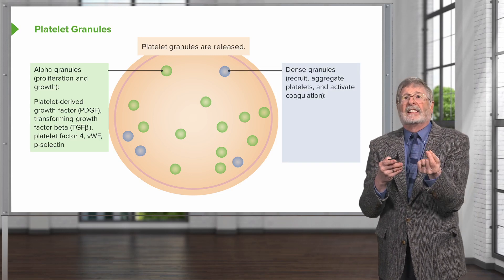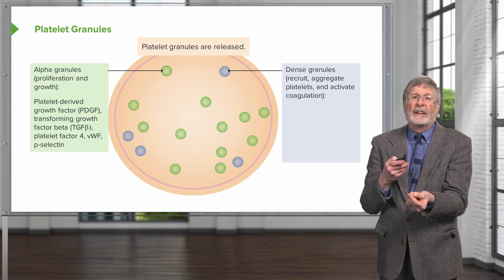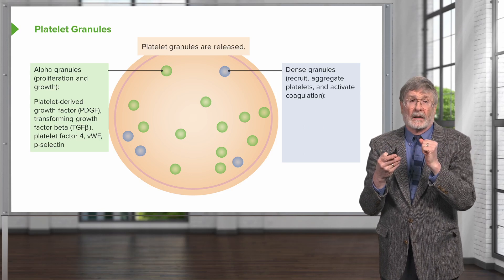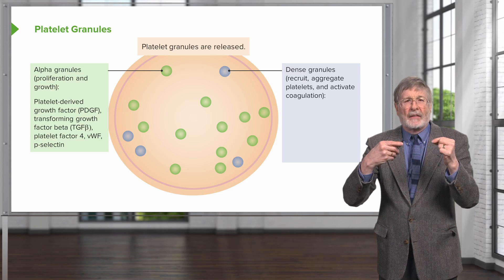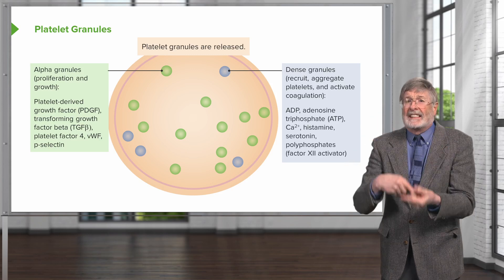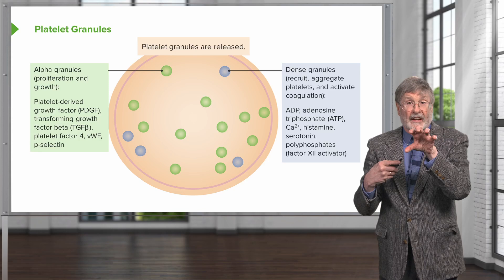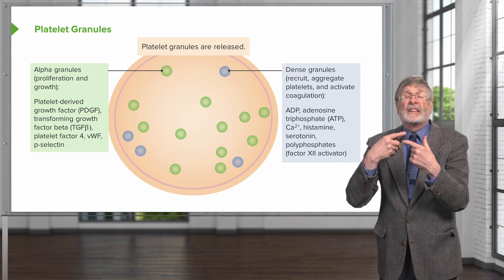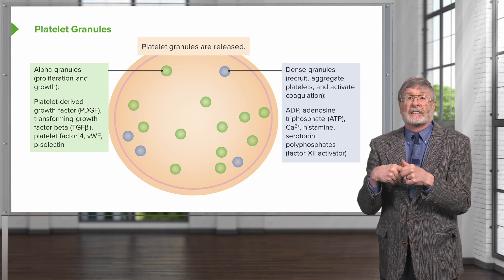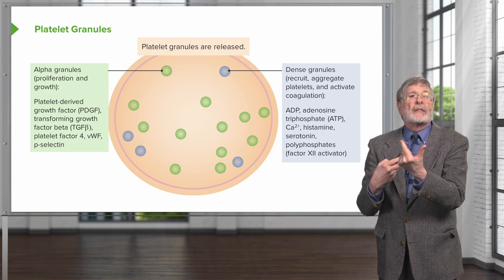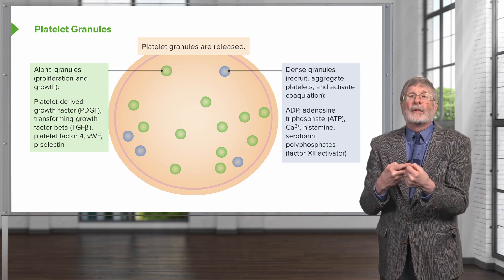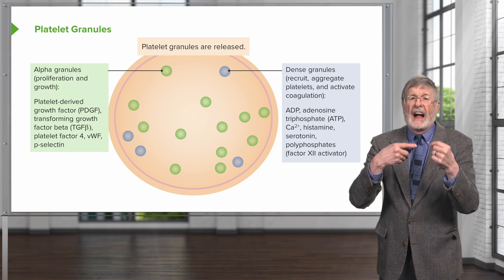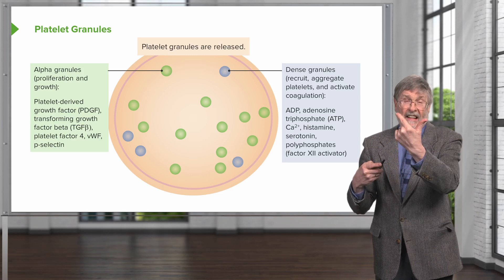The blue granules are called dense granules, and they're responsible for recruiting, aggregating, and activating platelets and the coagulation cascade. These dense granules contain ADP — one of the ways we activate platelets — as well as adenosine triphosphate, which drives some of the inflammatory response. They release calcium, important for driving the coagulation cascade, histamine and serotonin to affect vascular flow and tone, and polyphosphates as important substrates for activation of the coagulation cascade.